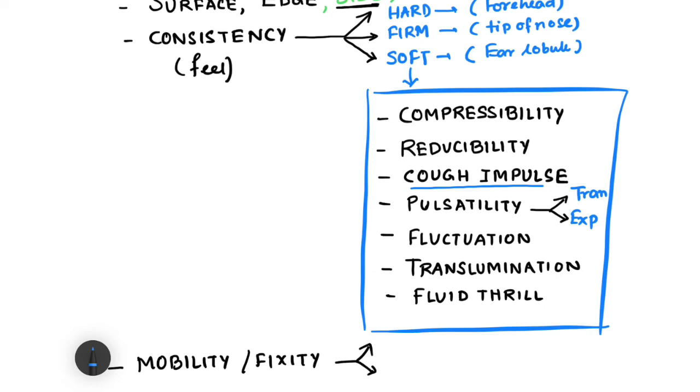If the swelling or lump is of directly arterial origin, there will be expansile pulsatility. But if the lump is not of arterial origin but in very close proximity to an artery, that will be transmitted pulsatility. Then there's fluctuation, trans-illumination, and fluid thrill. I will make separate videos on each of these tests because these topics require detailed discussion.